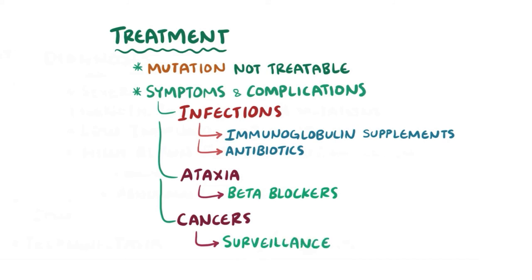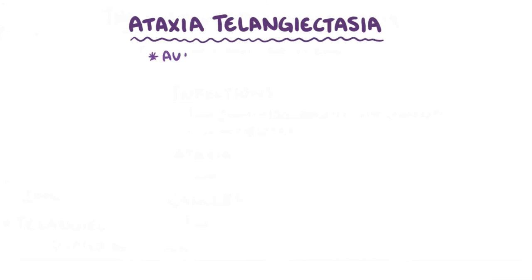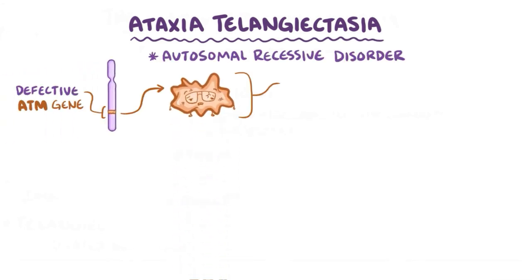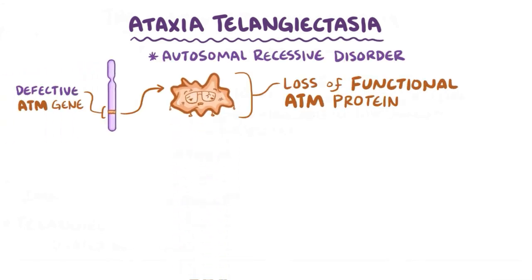As a quick recap, ataxia telangiectasia is an autosomal recessive disorder where a defective ATM gene causes an absence of the protein ATM, which is used to repair damage to cellular DNA.